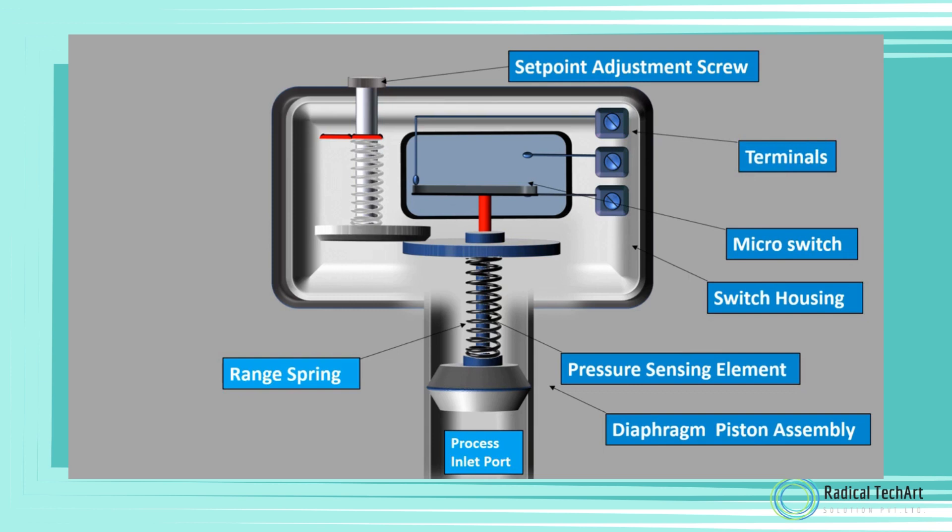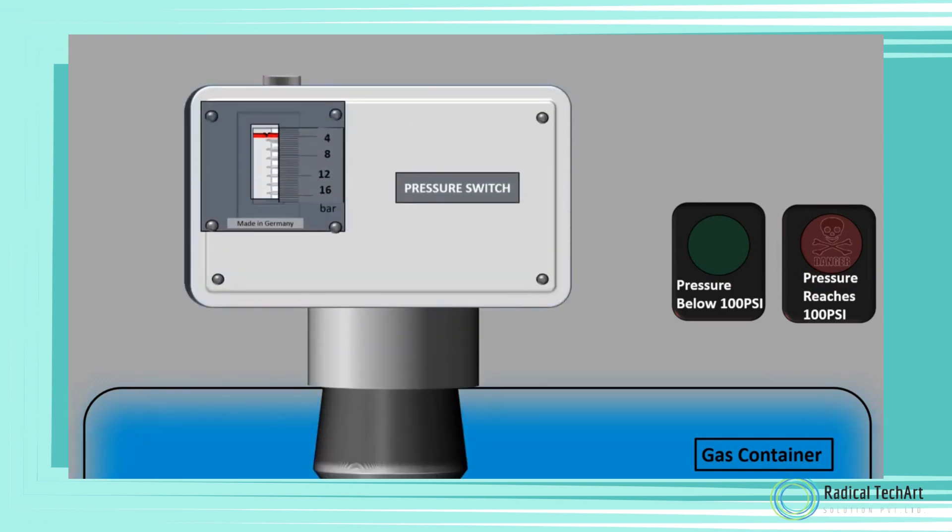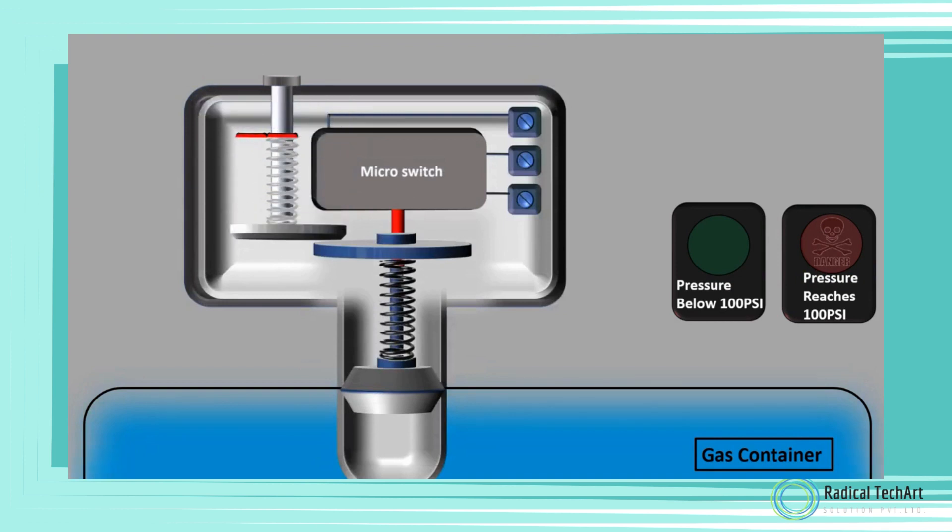Working of a mechanical pressure switch: Consider that we have a gas container and we need a green light to switch on when the pressure inside the container is below 100 PSI and a red light to switch on when the pressure reaches 100 PSI. For this, we install a pressure switch on this container and adjust the setpoint of this pressure switch at 100 PSI by turning the setpoint adjustment screw.